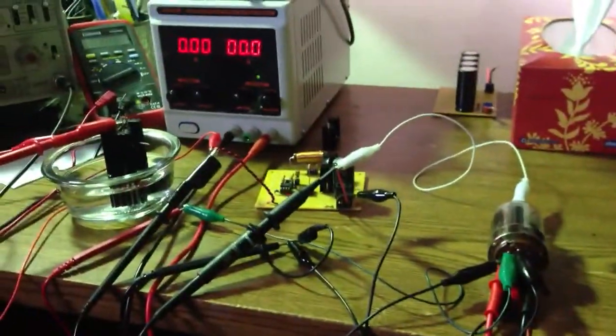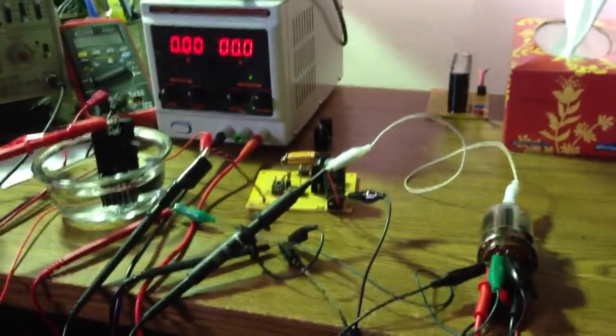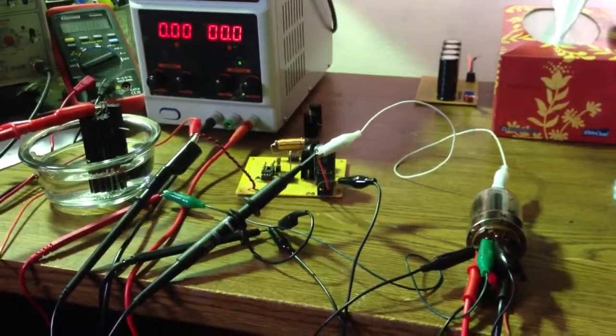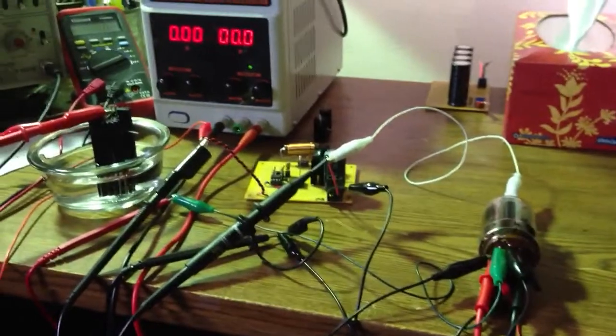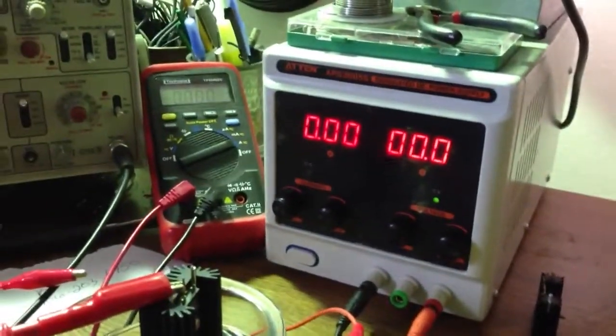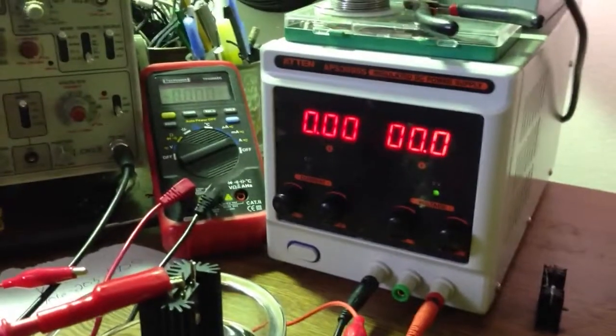We're back again with the 6146 beam power pentode. I have it wired up right now in triode mode with all the grids connected together. And I have the variable DC bench supply hooked up to the grids, varying between 0 and about 16-17 volts.